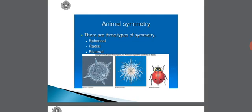Now let me go through symmetry. In the case of animals, there are different types of symmetry because the shape of the bodies of these animals are different. Symmetry basically refers to the mode of arrangement of the different body organs on either sides of the main axis of the body. There are three types of symmetry generally seen in animals.